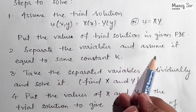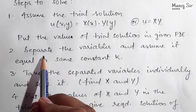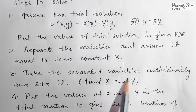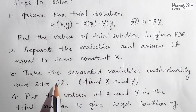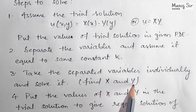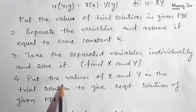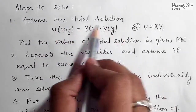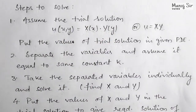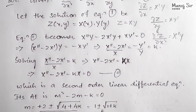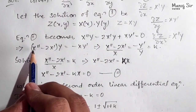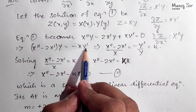The next step is to separate the variables and set each side equal to the same constant k. We separate the variables, then solve each ODE individually to get X and Y. After finding X and Y, we substitute them back into the trial solution z equals X·Y to get the required solution. Taking the X·Y term to the right-hand side and factoring Y from the first two terms: X''Y minus 2X'Y equals minus X·Y'.